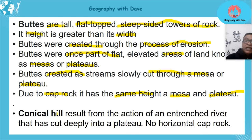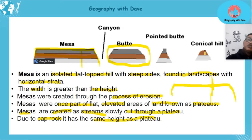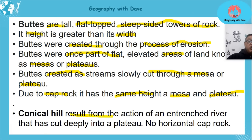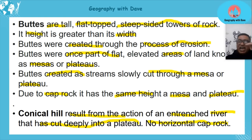Now let's look at a conical hill. It is a bit smaller and generally has no cap rock. It forms as a result of the action of an entrenched river that has deeply cut into the plateau. Because it generally has no cap rock, it gets eroded and does not maintain the same height as the mesa, the butte, or the plateau.